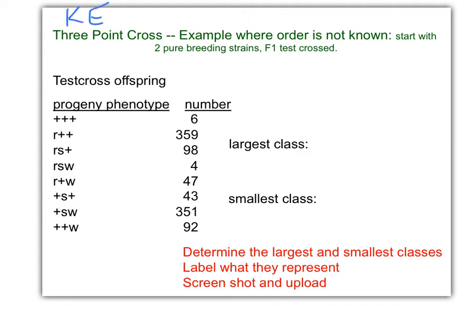Here's the key to the three-point test cross for uploading, so let's get going. Of course, two pure breeding strains, F1 is test crossed. The test cross offspring phenotype and number of observed. We need to set them into two different classes, the largest class and the smallest class.